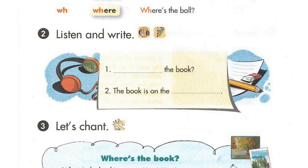Page 22, Lesson 3, Activity 2: Listen and write. 1. Where's the book? 2. The book is on the chair.